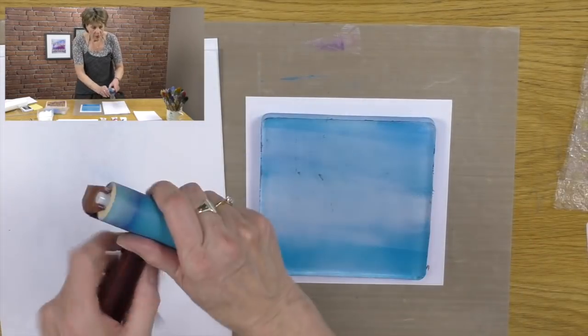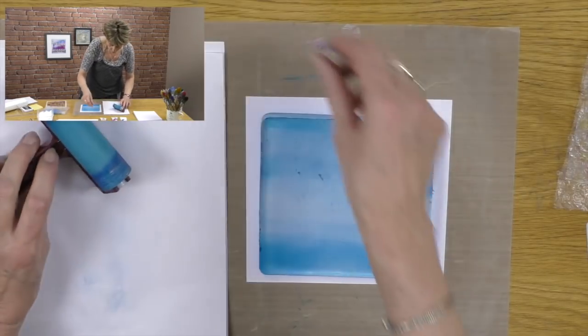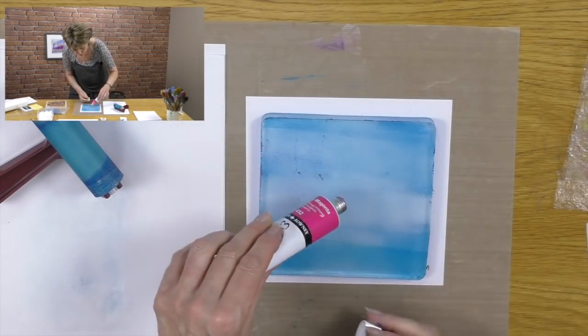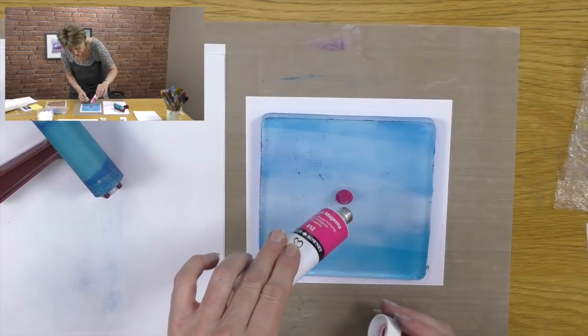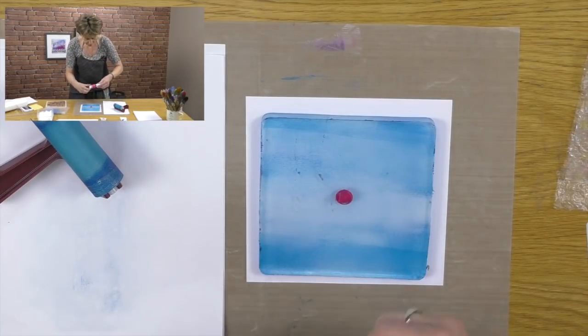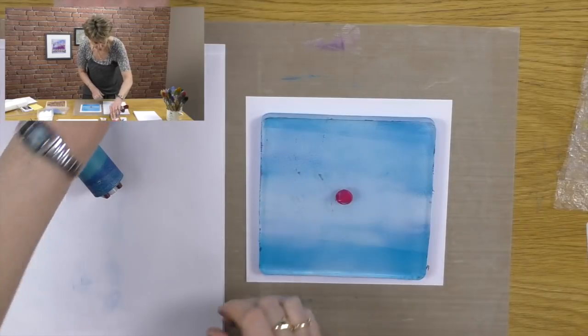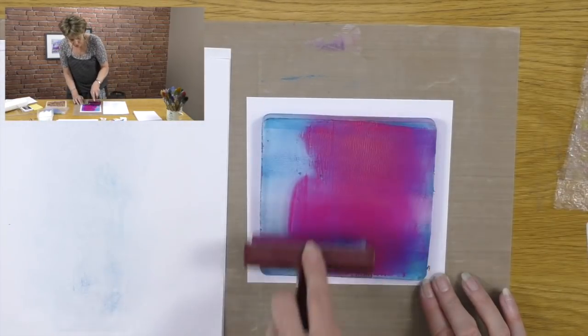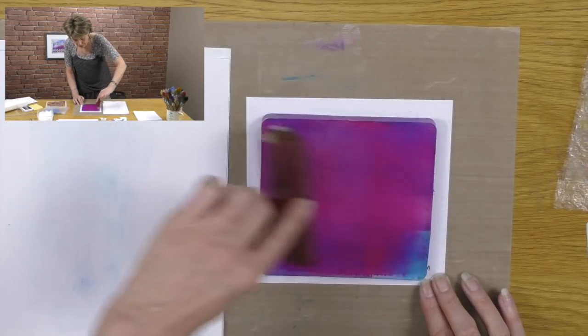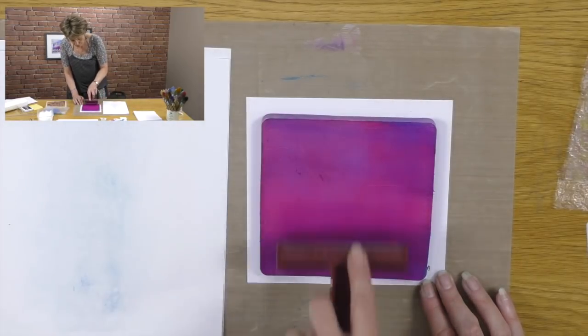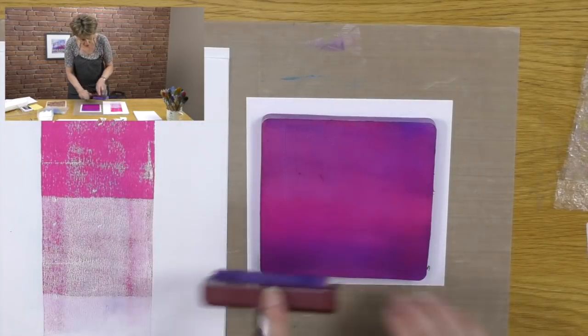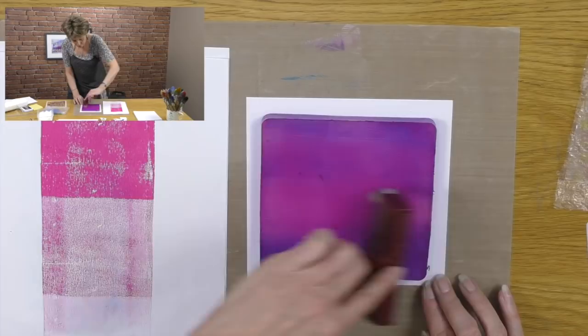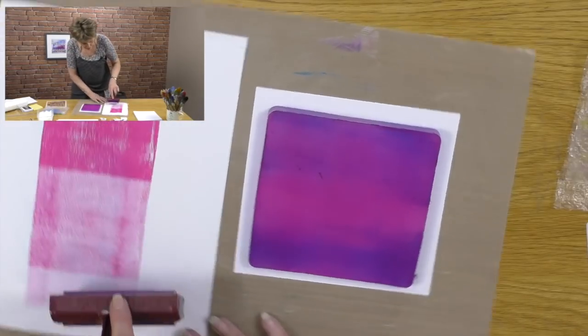I'm not worried about the blue on the brayer because that's all dry. So let's take some magenta now and add a little bit to the blue. Then we're going to spread this out over the blue and completely cover the whole thing. Always get rid of a little bit if you think it's too much.